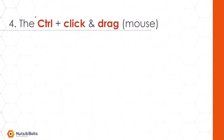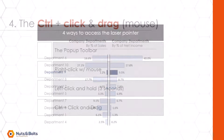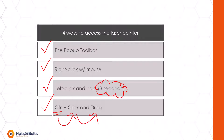The fourth way, which is my personal favorite, is to hold the control key on my keyboard and then click and drag with your mouse. So if I bring up a graphic of dueling bar charts, I can hold the control key and click and drag to get that default red laser pointer. As a quick recap, there are four ways to change your mouse cursor into a laser pointer: the pop-up toolbar, right-clicking with your mouse, left-clicking and holding for three to four seconds, and holding the control key while clicking and dragging.